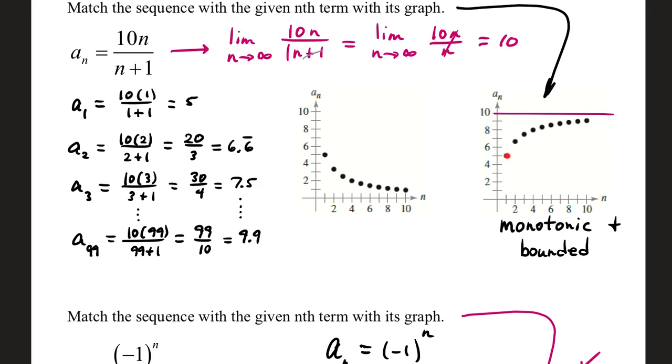Notice, when n was 1, we had 5. When n is 2, we had 6.6 repeating. When n is 3, we had 7 and a half and so forth. If you keep building terms, you eventually have a trail of points that close in on 10.